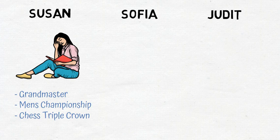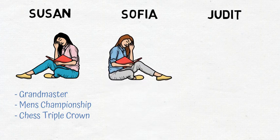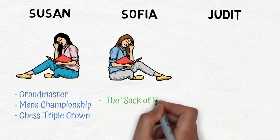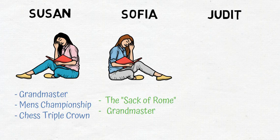The middle child, Sophia, is legendary for what is known as the Sack of Rome. She scored 8.5 out of 10 in a tournament held in Rome in 1989 against very strong competition. This performance has been rated as the fifth best tournament performance by anyone, ever.